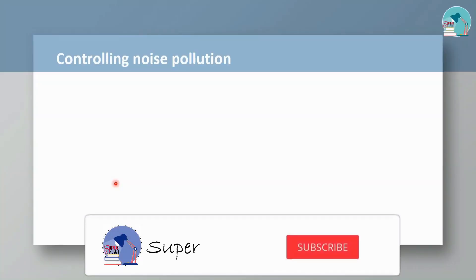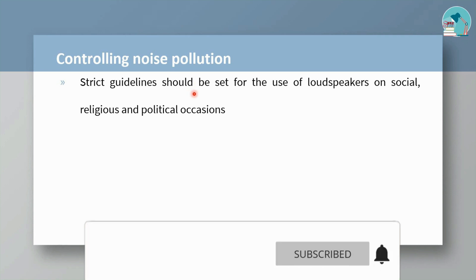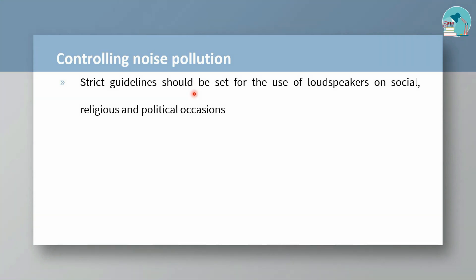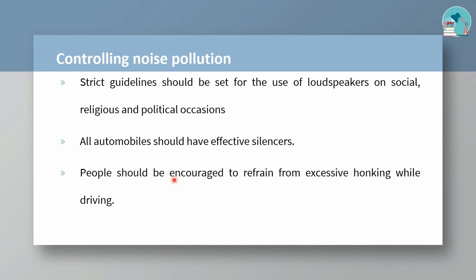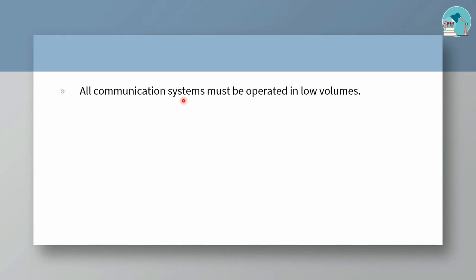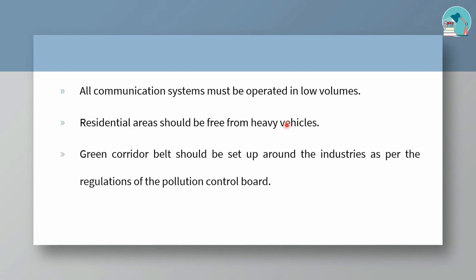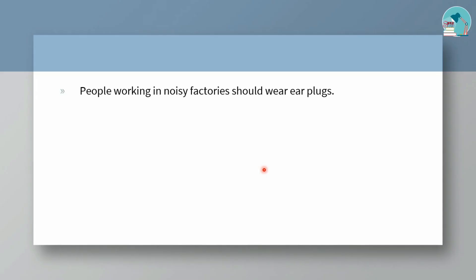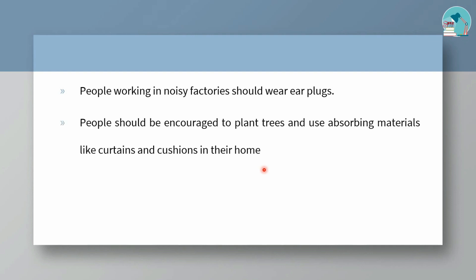To reduce noise pollution, we can use effective silencers on vehicles and loudspeakers. Industry machines should be properly protected. Following green corridor belts near residential areas helps. In noisy factories, workers can use earplugs. Planting trees can also help reduce noise pollution.